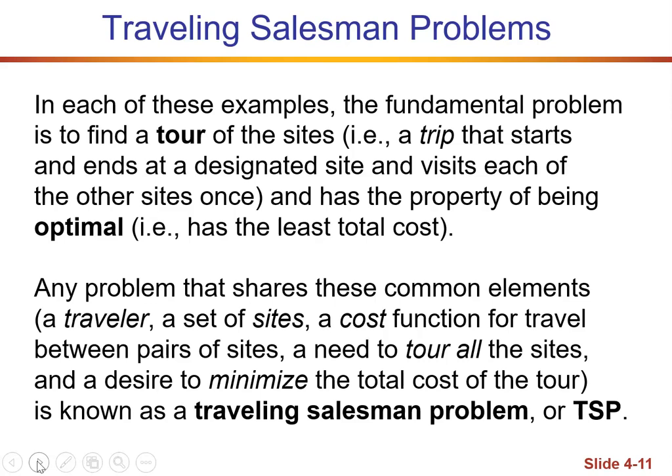Any problem that shares these common elements — a traveler, a set of sites, a cost function for the travel between the sites (again, that could be time or money), and the need to tour all the sites and optimize it, minimizing the total cost — is known as a traveling sales problem, or TSP.